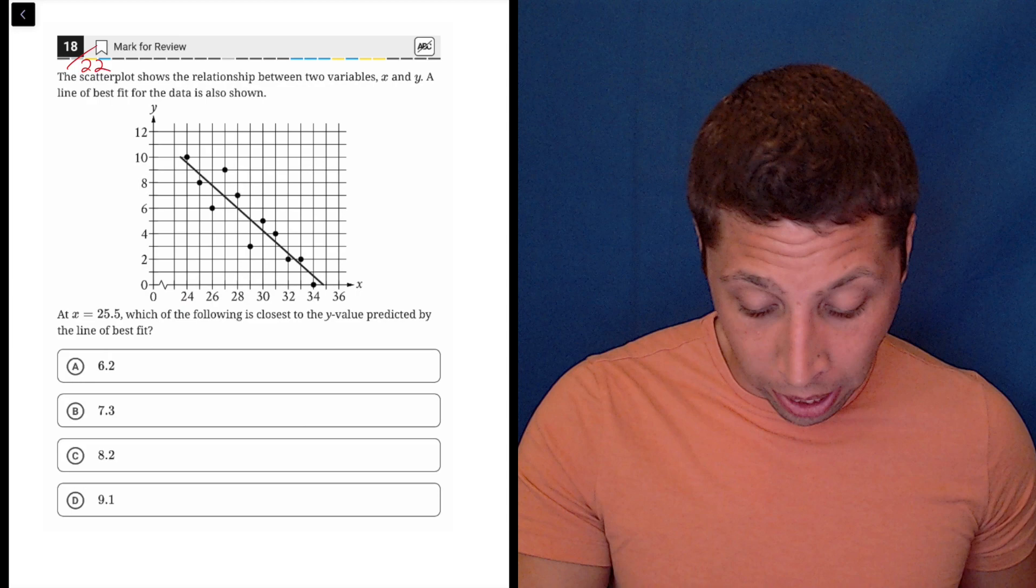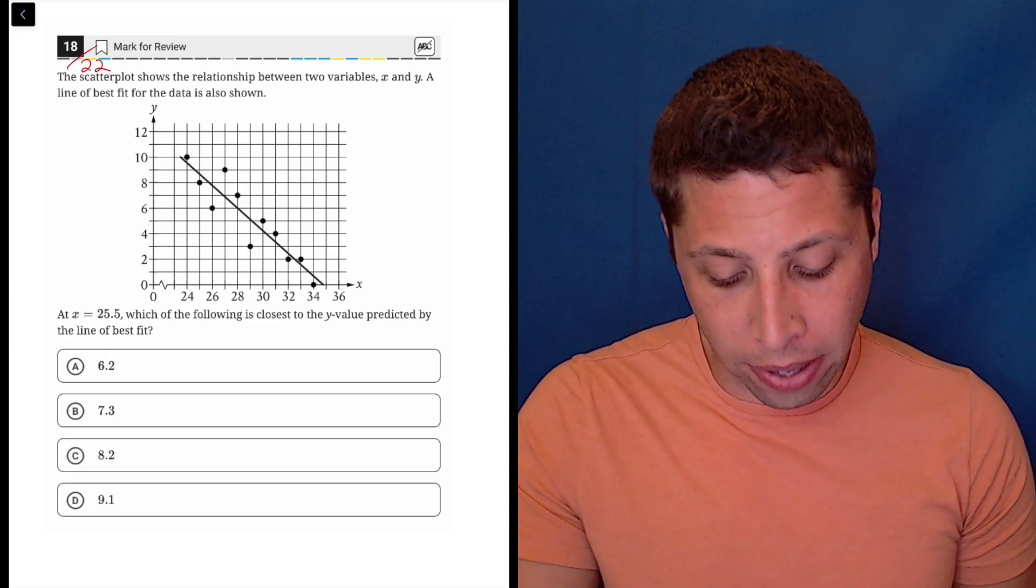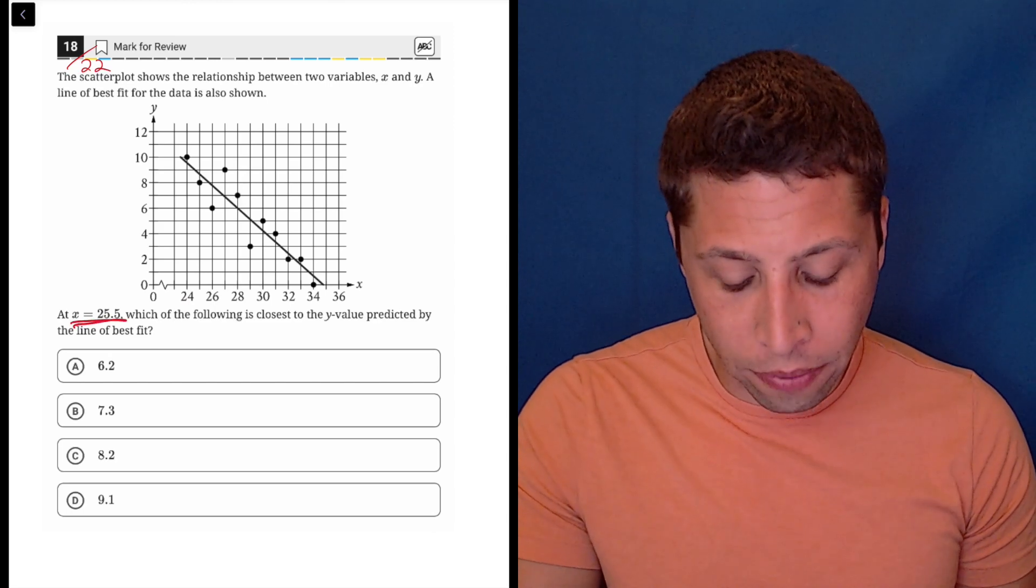It's really just giving you instructions. X equals 25.5, which of the following is closest to the Y value predicted by the line of best fit? So, okay, X is 25.5.